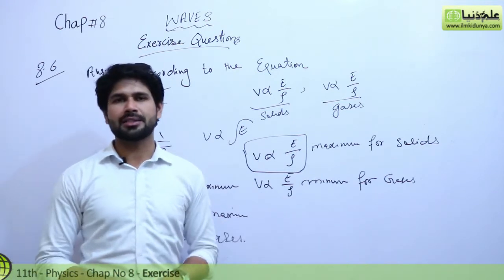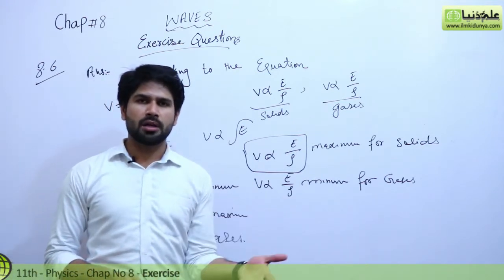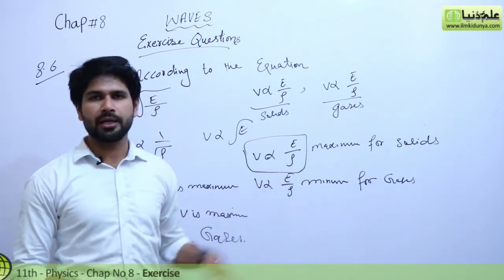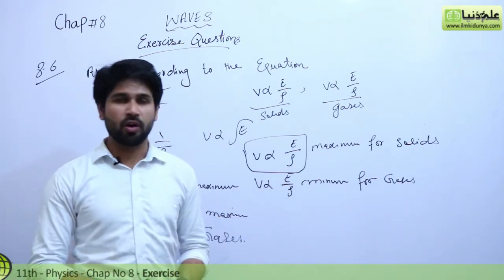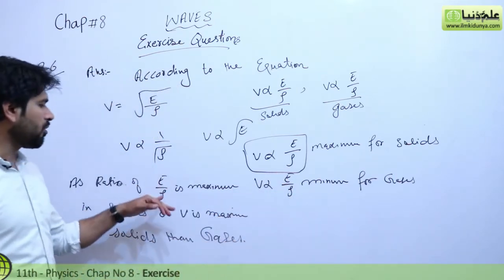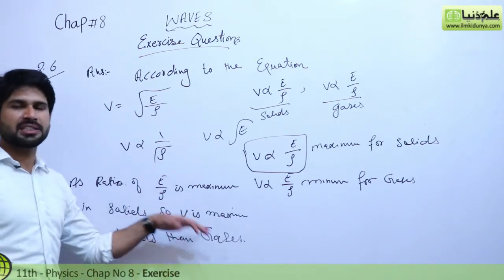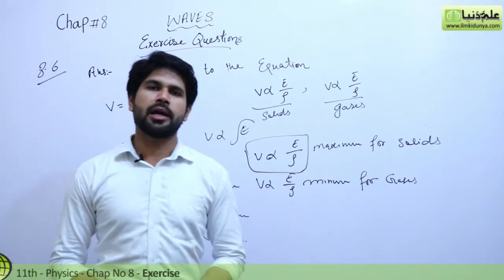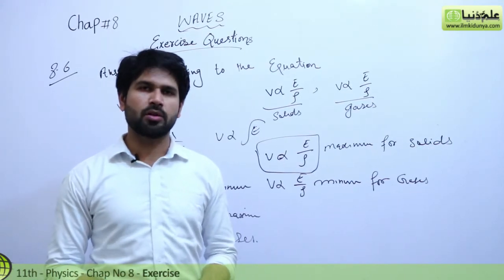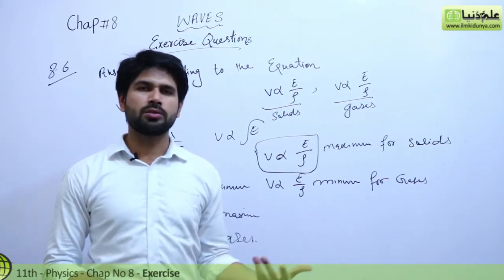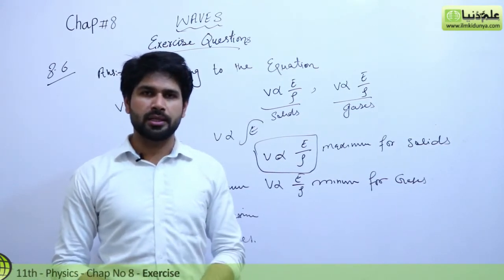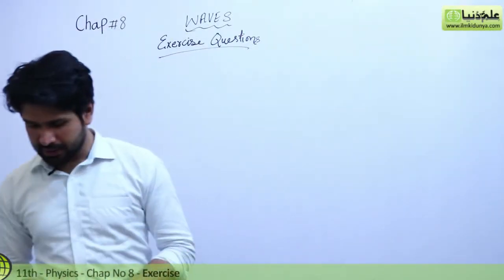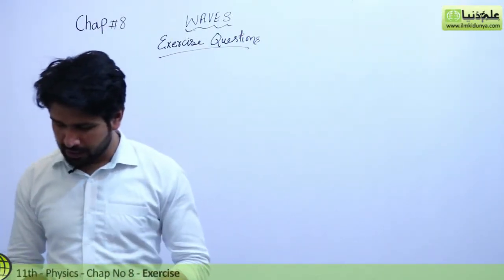So we can answer this question: sound travels faster in solids than in gases because the E over rho ratio is maximum for solids and minimum for gases. Therefore, sound travels faster in solids than in gases. Now we are going to discuss the next question, which is 8.7.